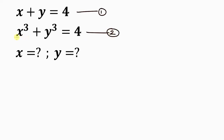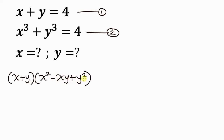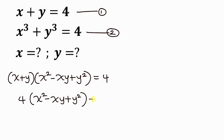We're going to start from equation 2. Notice that this is the sum of two cubes, which has an identity of x plus y, times x squared minus xy plus y squared. This is equal to 4. Now notice that from equation 1, x plus y is 4, so I'm going to put 4 here. So this becomes 4 times x squared minus xy plus y squared, equal to 4.